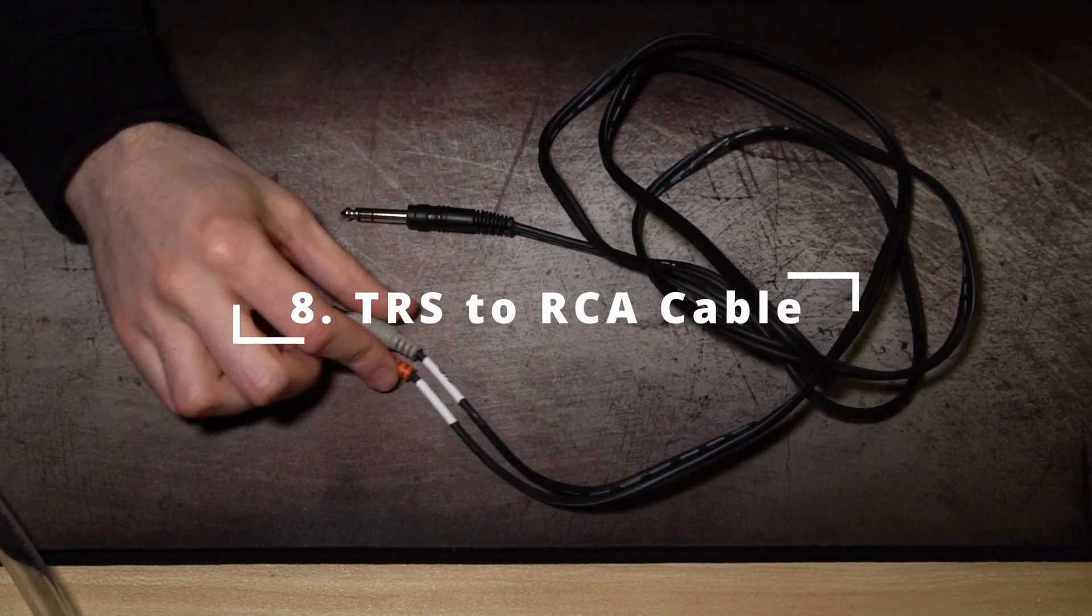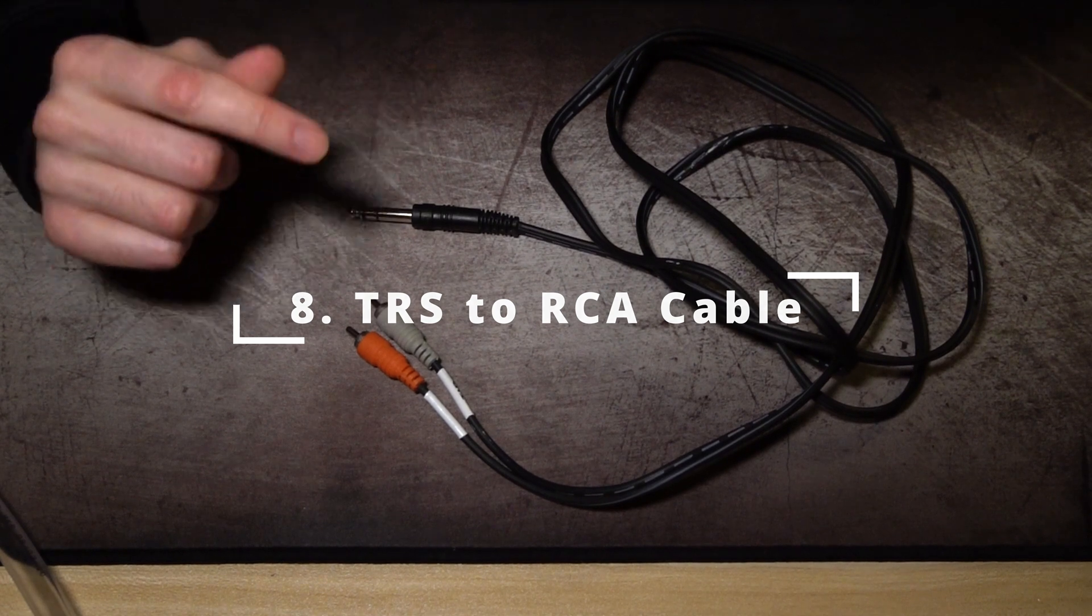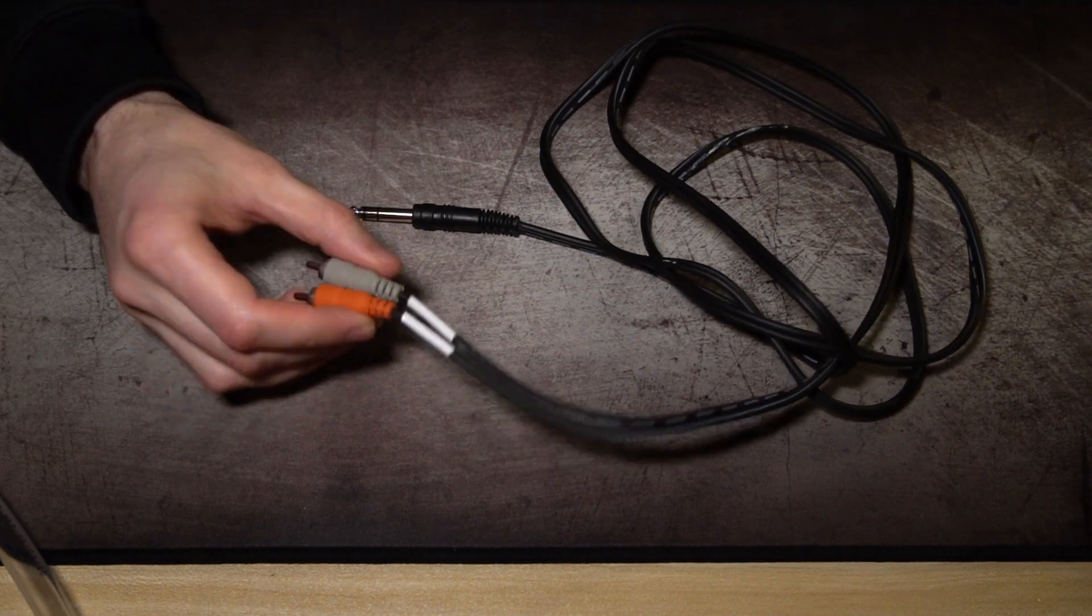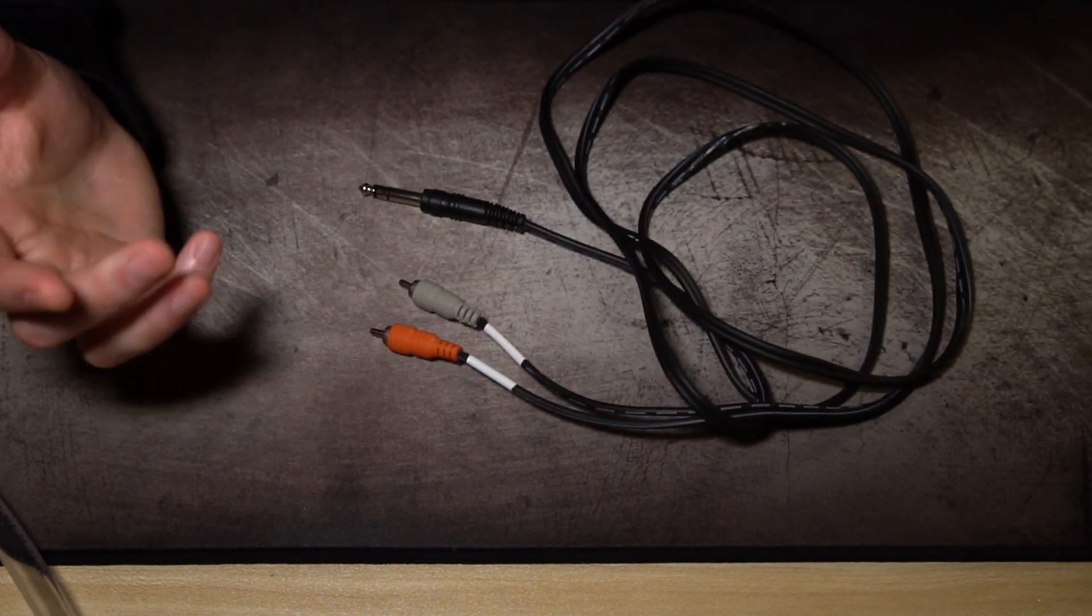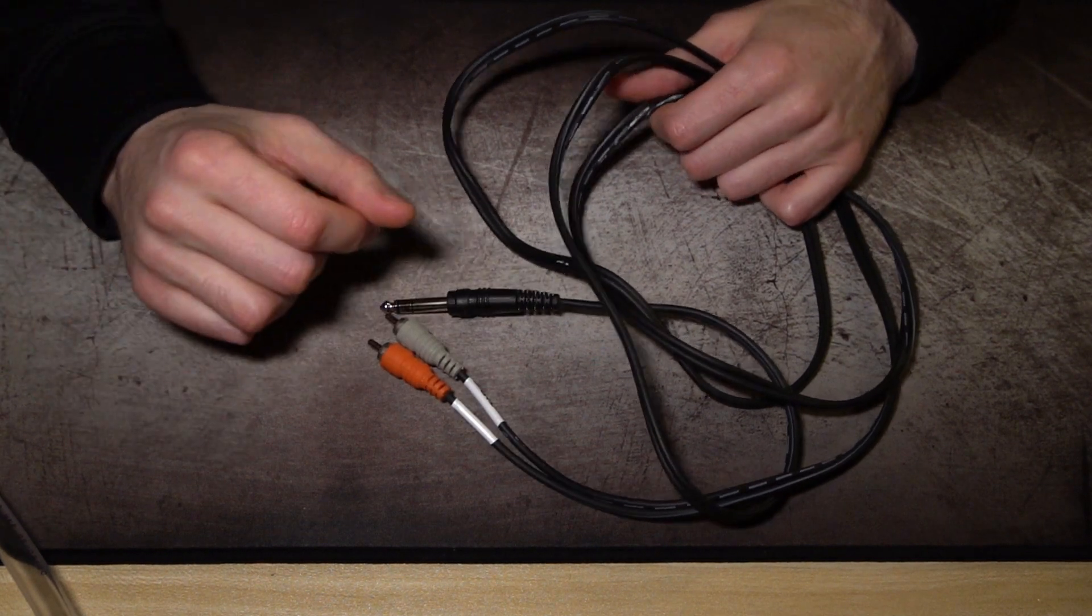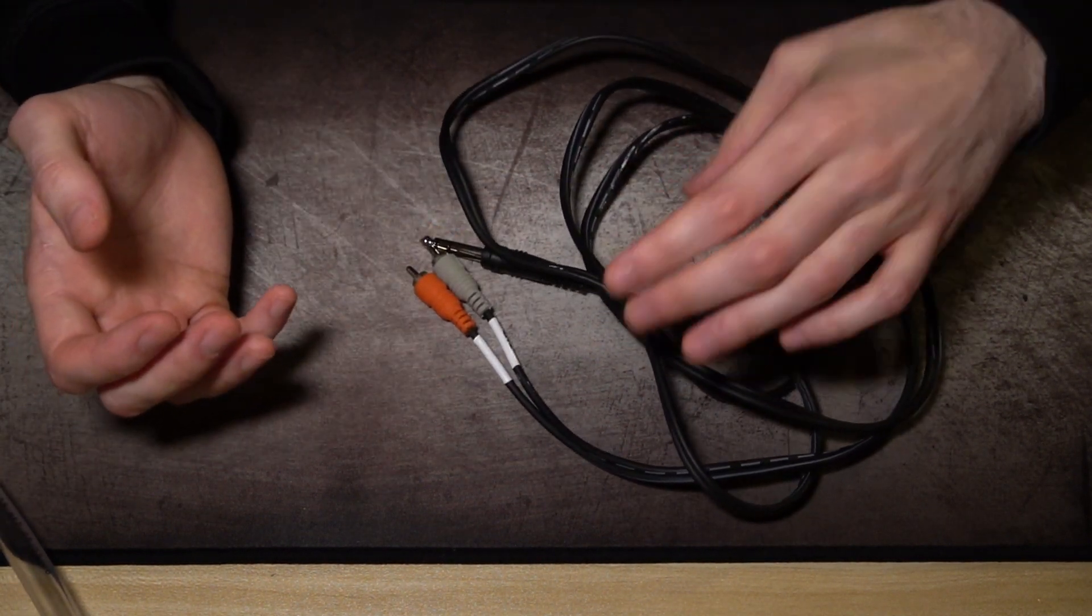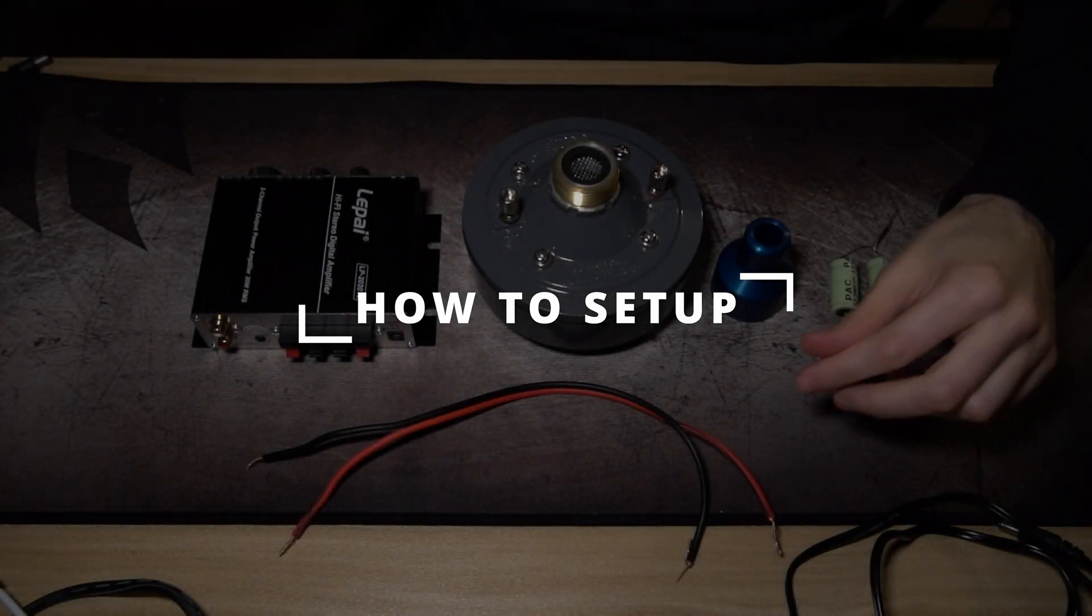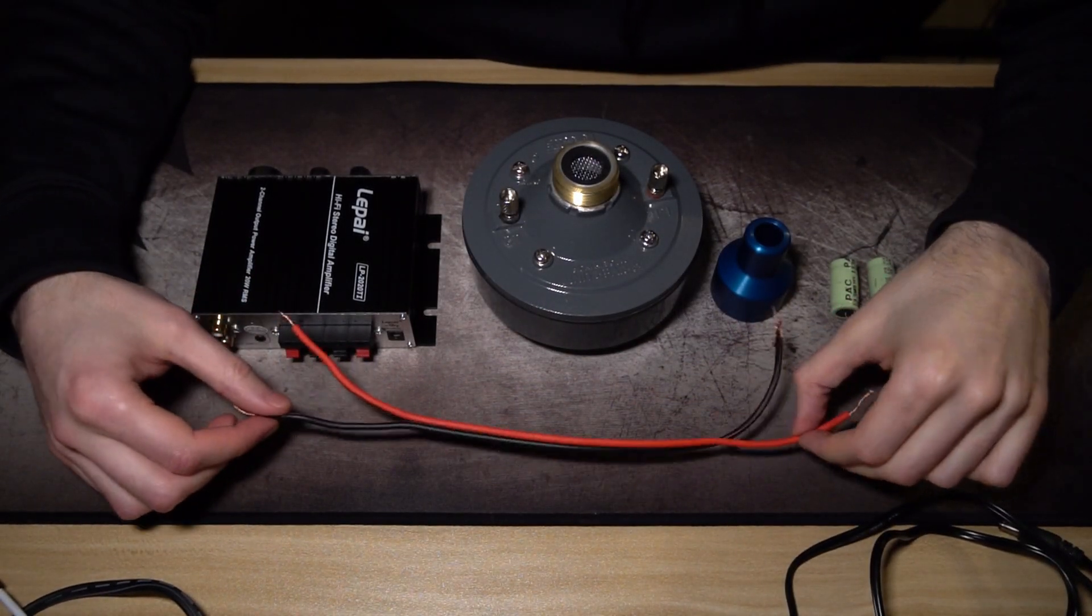The last thing, the eighth thing you're going to need, is TRS to RCA cables. This is by Hosa, just the basic RCA cables, and it's all you're really going to need. Now that you got all your parts, let's set this bad boy up.